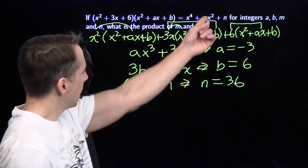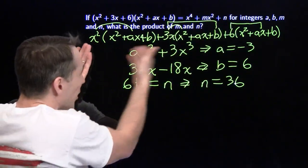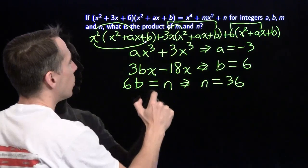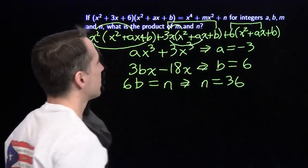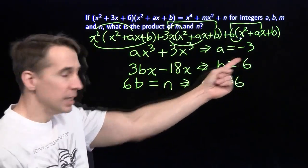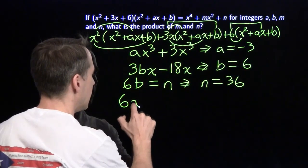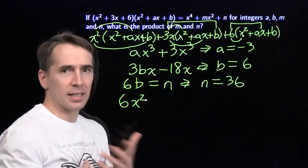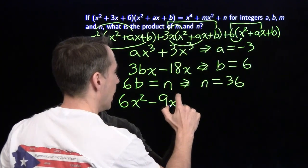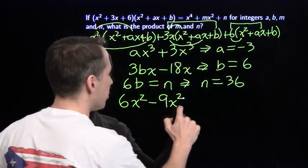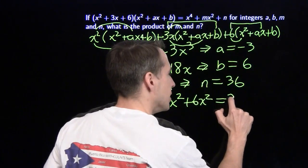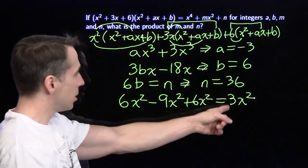And now we're on m. M is the coefficient here of the x² term. So now I have to figure out where x²s come out of this. I'm going to get one right here. We're going to get one right here. We multiply the 3x times the ax term. We're going to get one right here. So we've got b times x². We know that b is 6, so that gives us a 6x². And right here we have 3x times ax. That gives us a 3 times ax². A is negative 3. 3 times a, negative 9. And then finally over here we have another 6x². So add these up we get 6 plus 6 is 12. Minus 9 is 3x². Which tells us that m is 3.